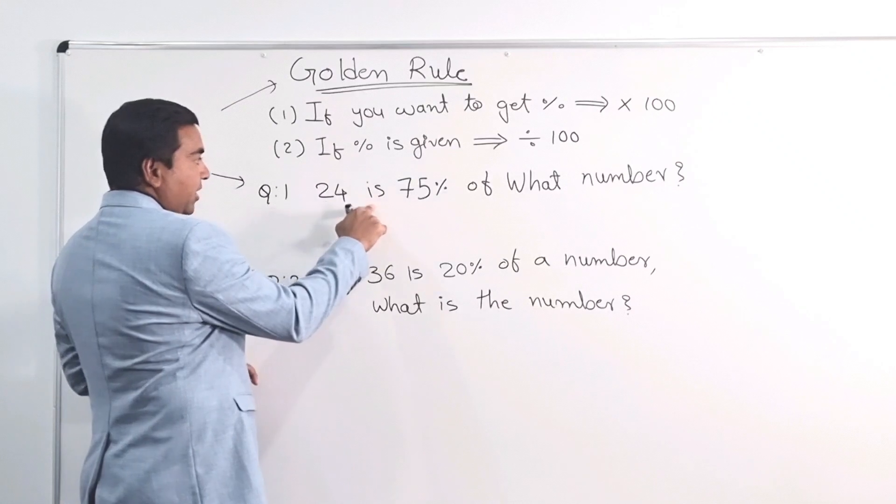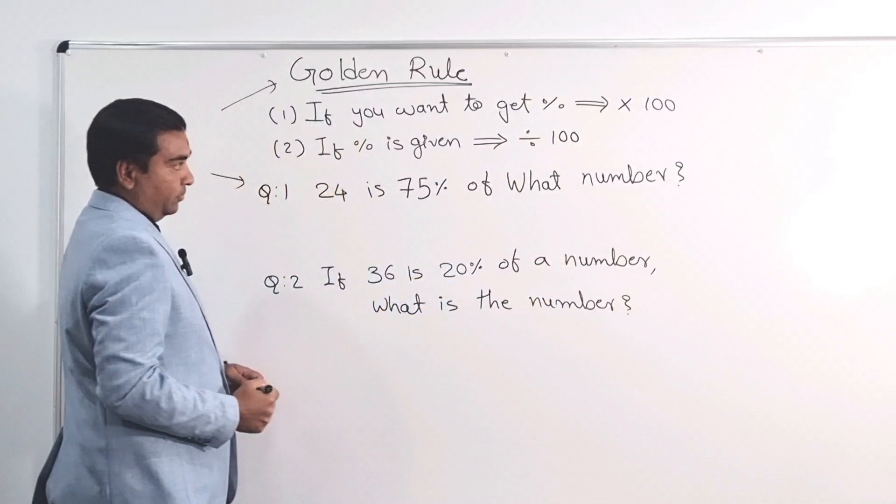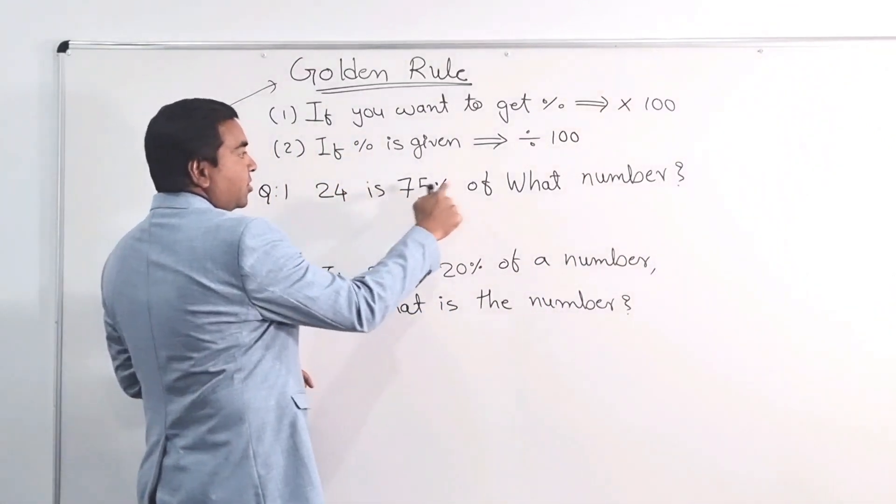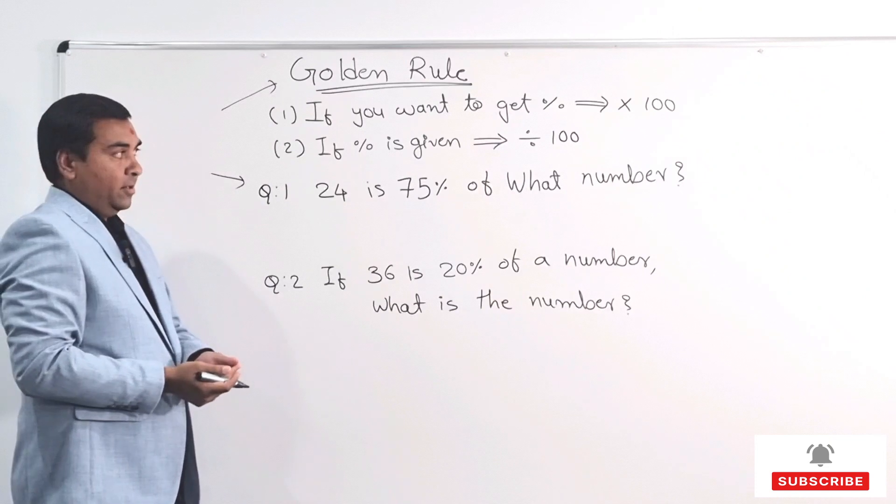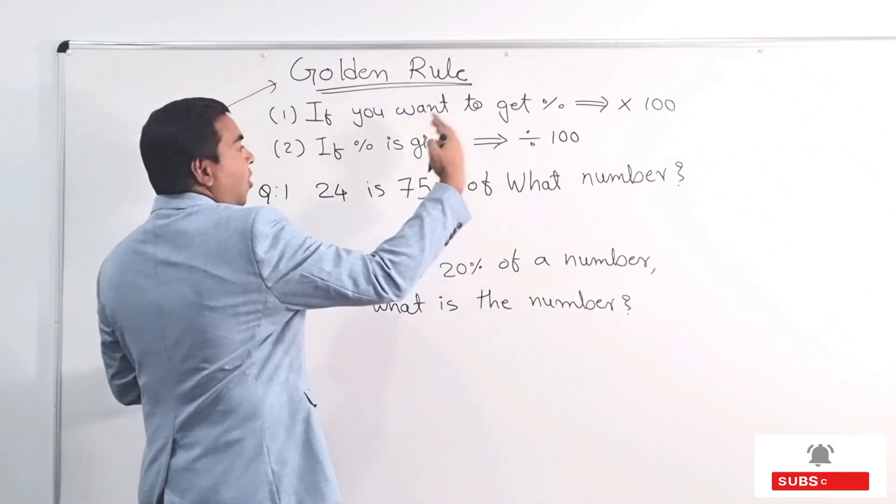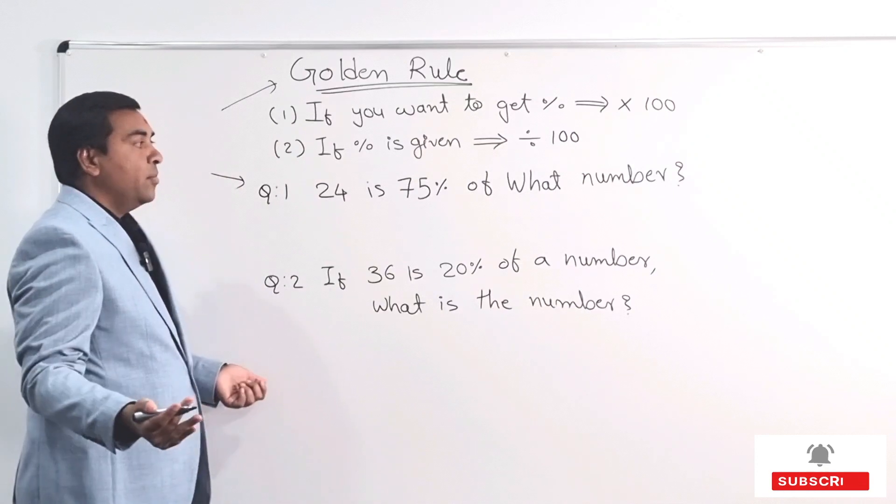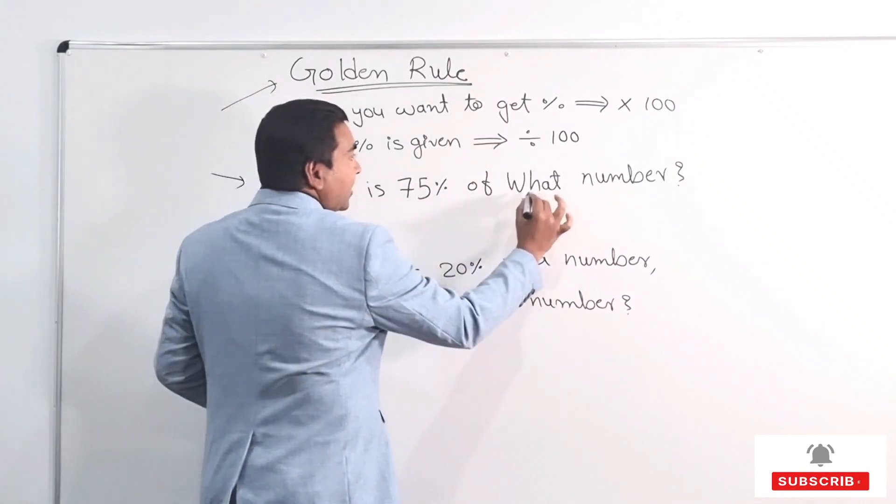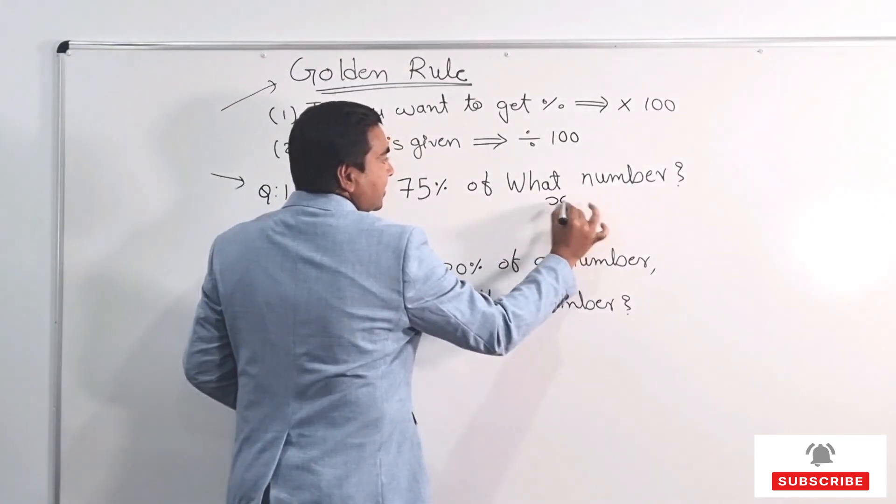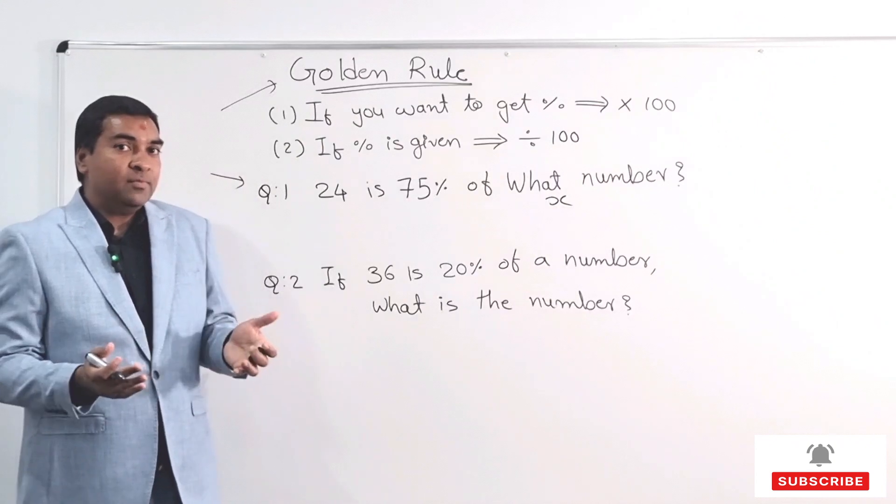So my very first question is, 24 is 75% of what number? So 75% of some number is 24, that's what I can understand. So 75% of what number? That number I want to find out. So I don't know the number. So because I don't know the number, I'm going to take like that number is X. So the number I want to find out is let us say X because I don't know.